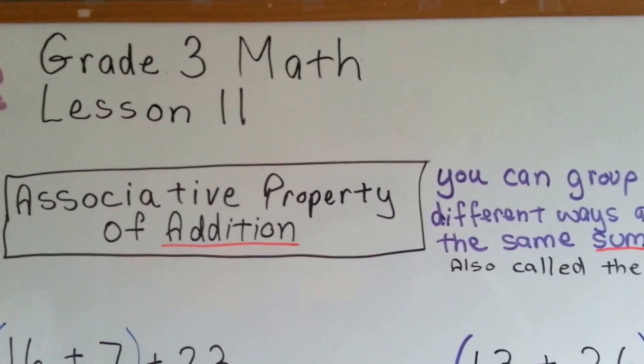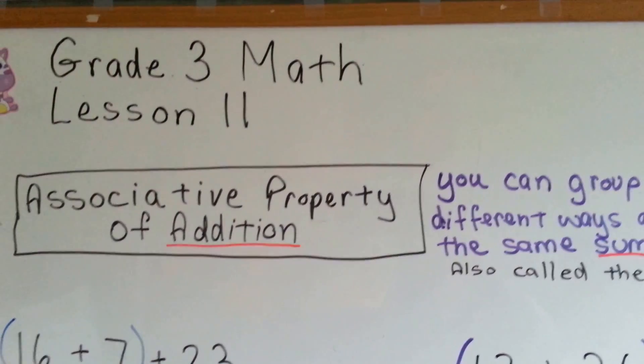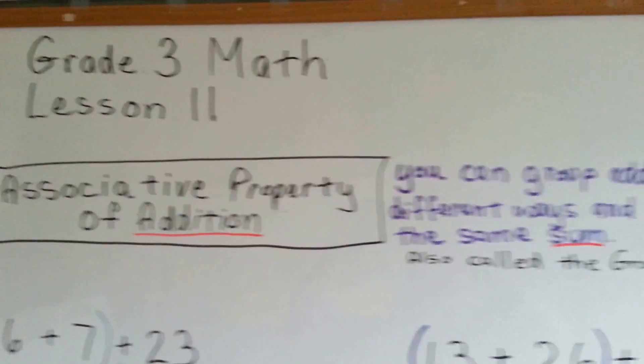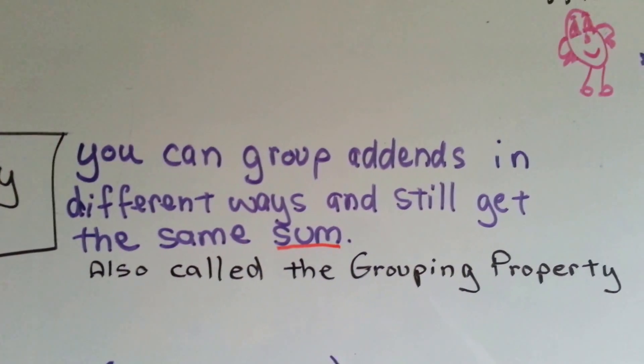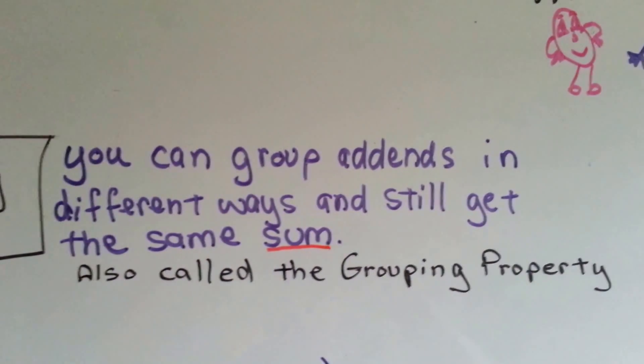We've talked about the identity property and the commutative property. This is the associative property. It says that you can group addends in different ways and still get the same sum. It's also called the grouping property.